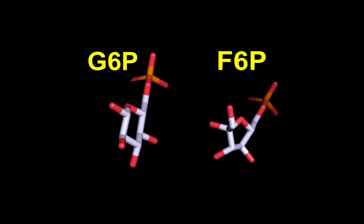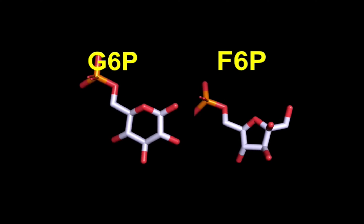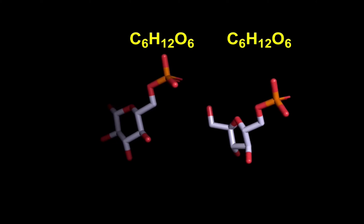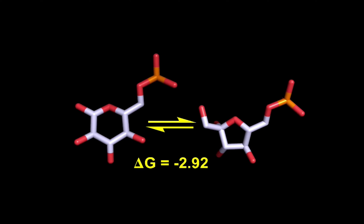Isomerization changes the arrangement of the covalent bonds in a molecule, but the chemical formula of the isomers is the same. Delta G for the isomerization reaction of G6P to F6P is negative 2.92, and at cellular pH it's calculated to be a positive 1.67. What this means is that the isomerization reaction is pretty close to equilibrium. Delta G and delta G0 prime are both hovering right around zero. Therefore, the reaction performed by this enzyme is reversible.